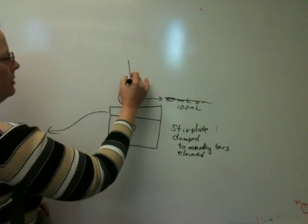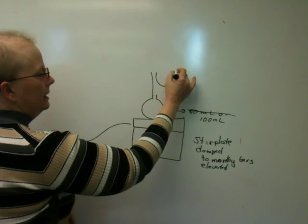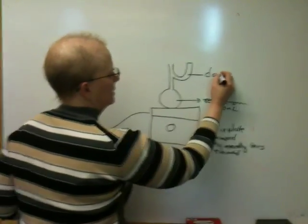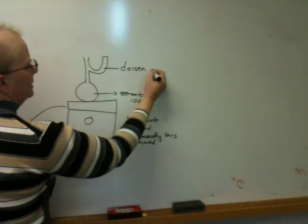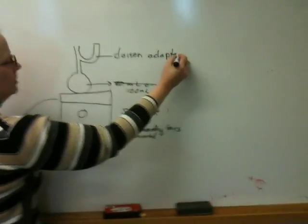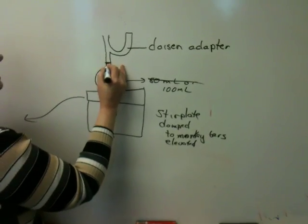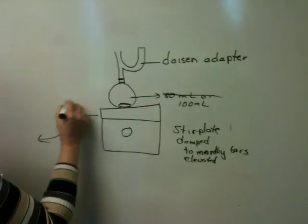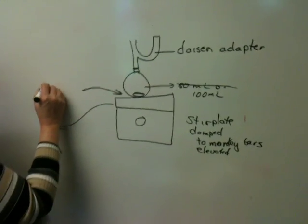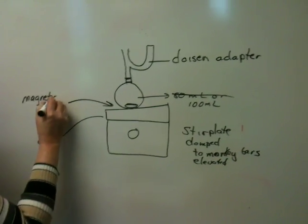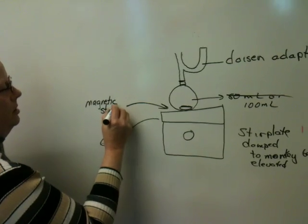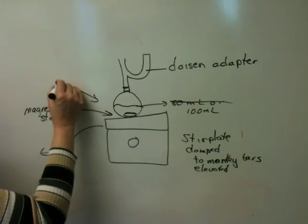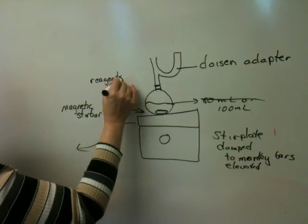Then on top of this, you're going to use the Claisen adapter. Notice my very bad drawing here. This is a Claisen adapter. This is the neck of the flask. Now in the bottom of the flask will go a stir bar. Magnetic stir bar, and your reagents.